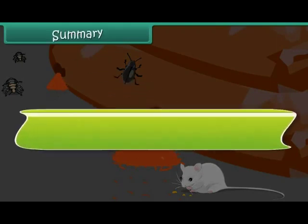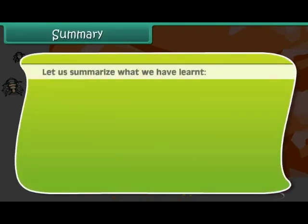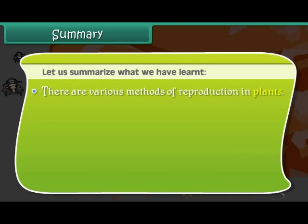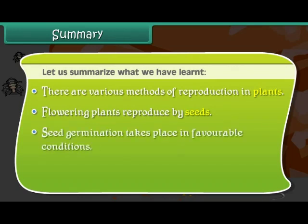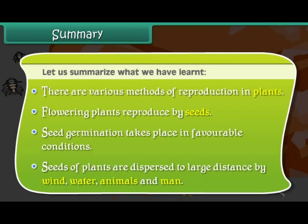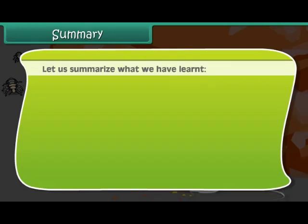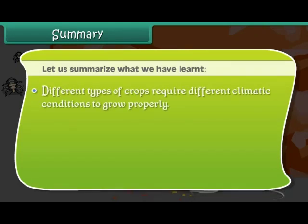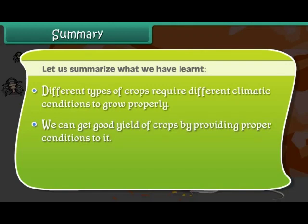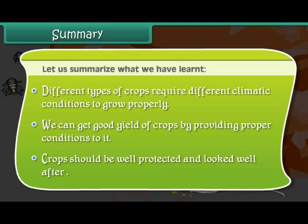Summary: Let us summarize what we have learned. There are various methods of reproduction in plants. Flowering plants reproduce by seeds. Seed germination takes place in favorable conditions. Seeds of plants are dispersed to large distances by wind, water, animals, and humans. Different types of crops require different climatic conditions to grow properly. We can get good yield of crops by providing proper conditions, and crops should be well protected and looked after.